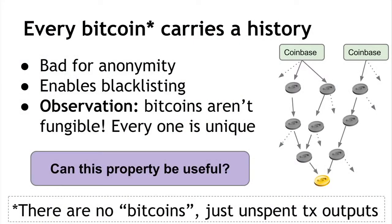Could this property be useful? I've argued that it's bad — it has problems for de-anonymizing people, for potentially blacklisting, and means Bitcoins aren't even fungible, which is a very interesting property for a currency to have from an economic standpoint. But I'll actually be arguing in the rest of this section that this can be a very useful property if we give meaning to that history.